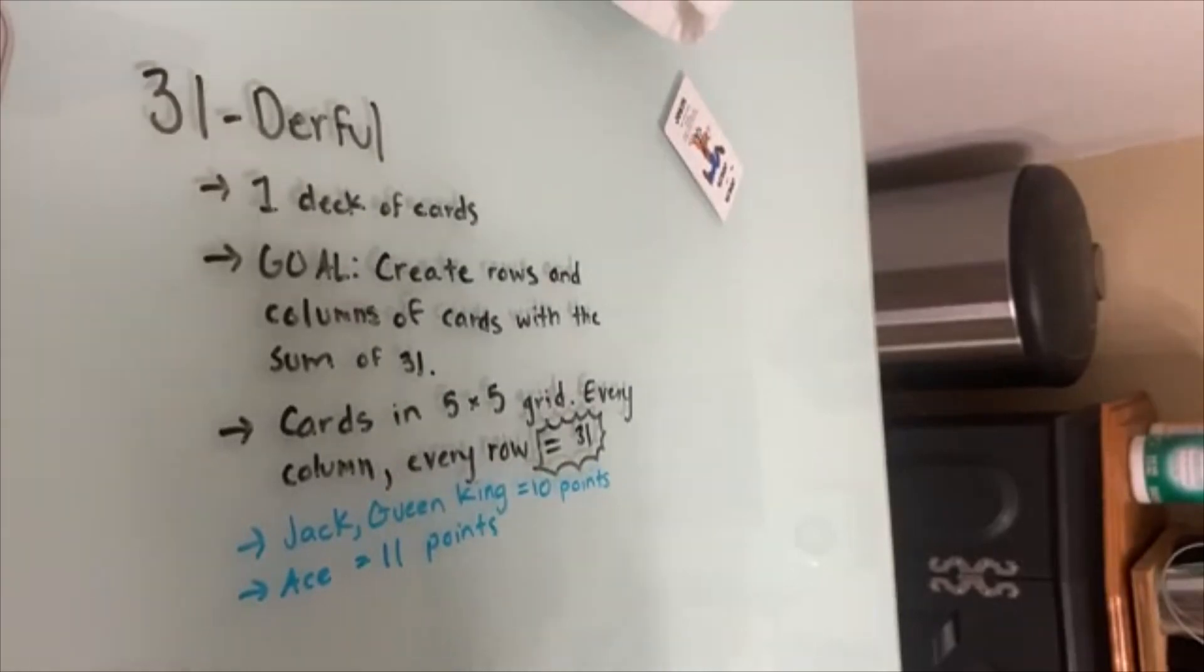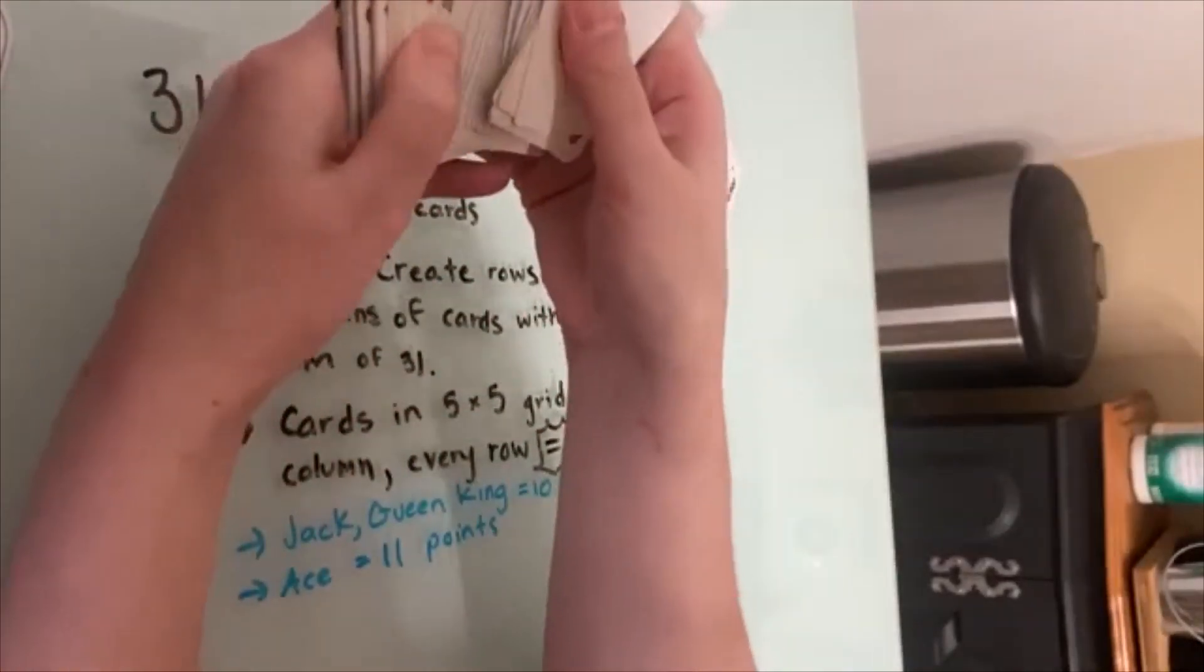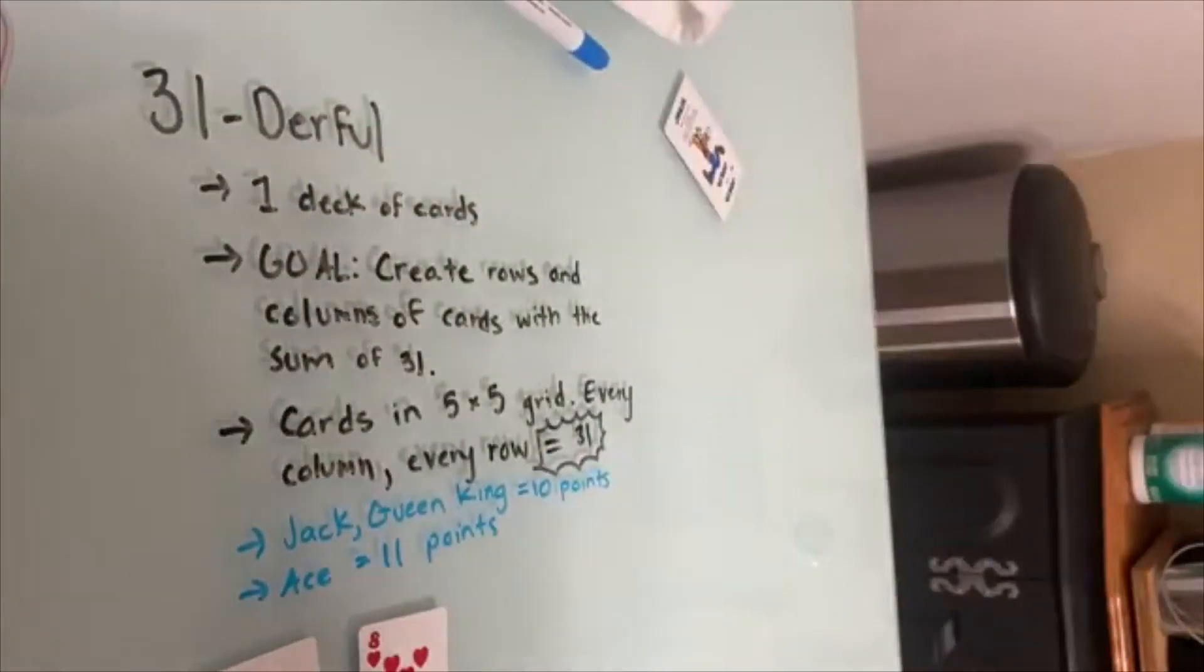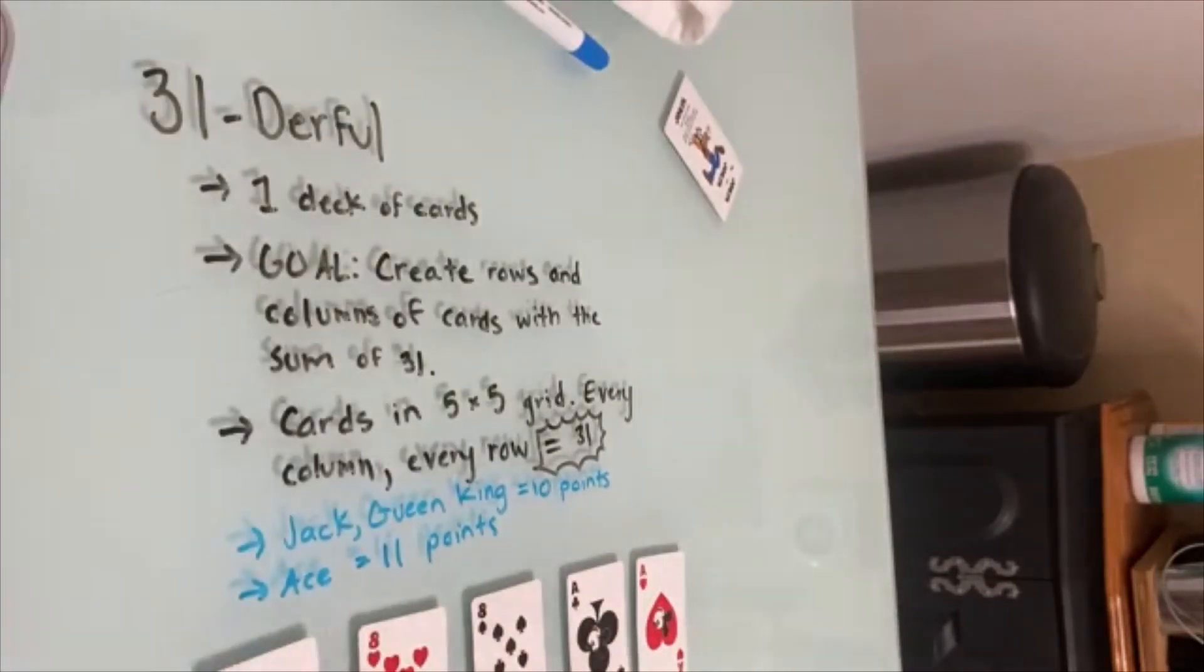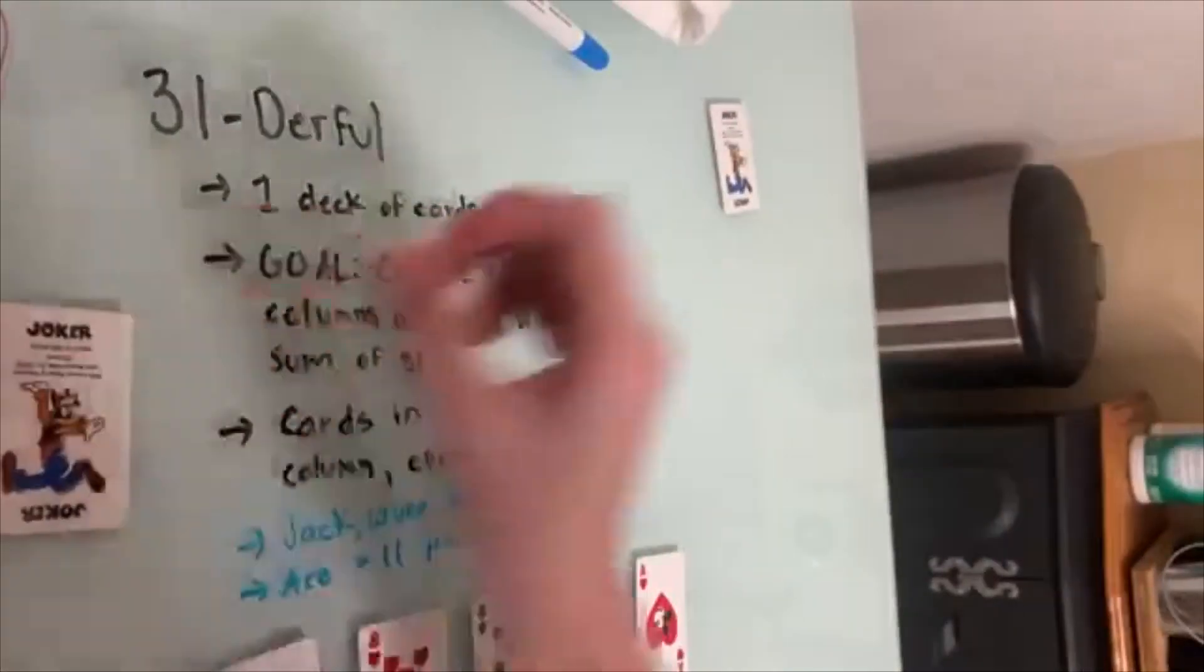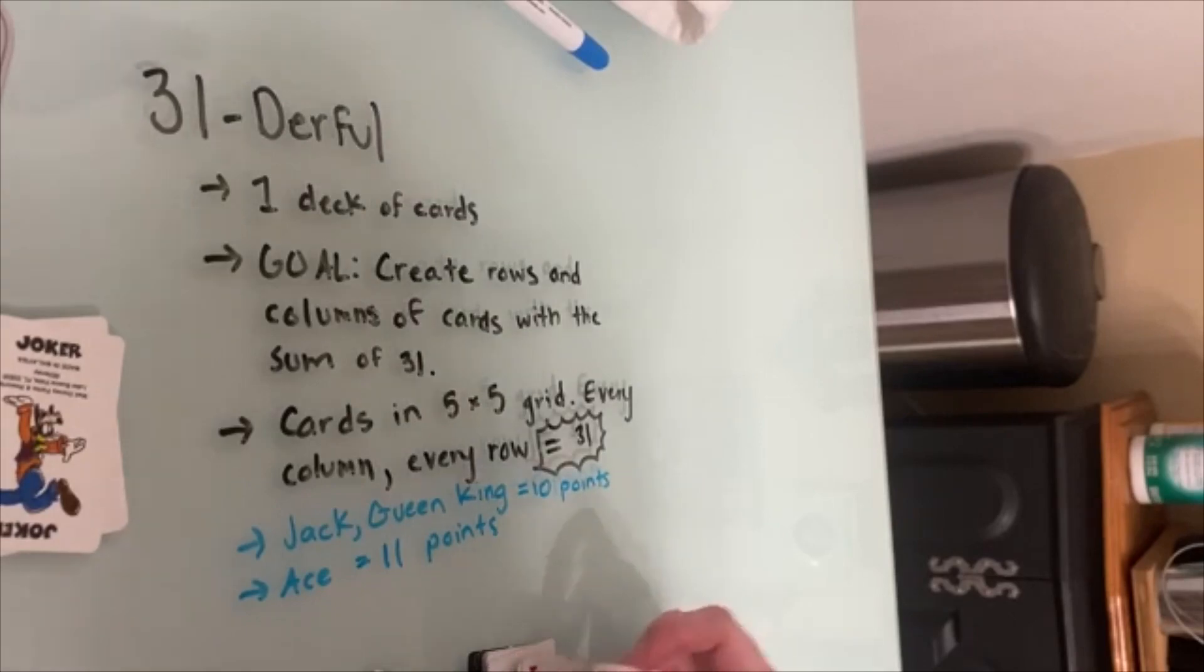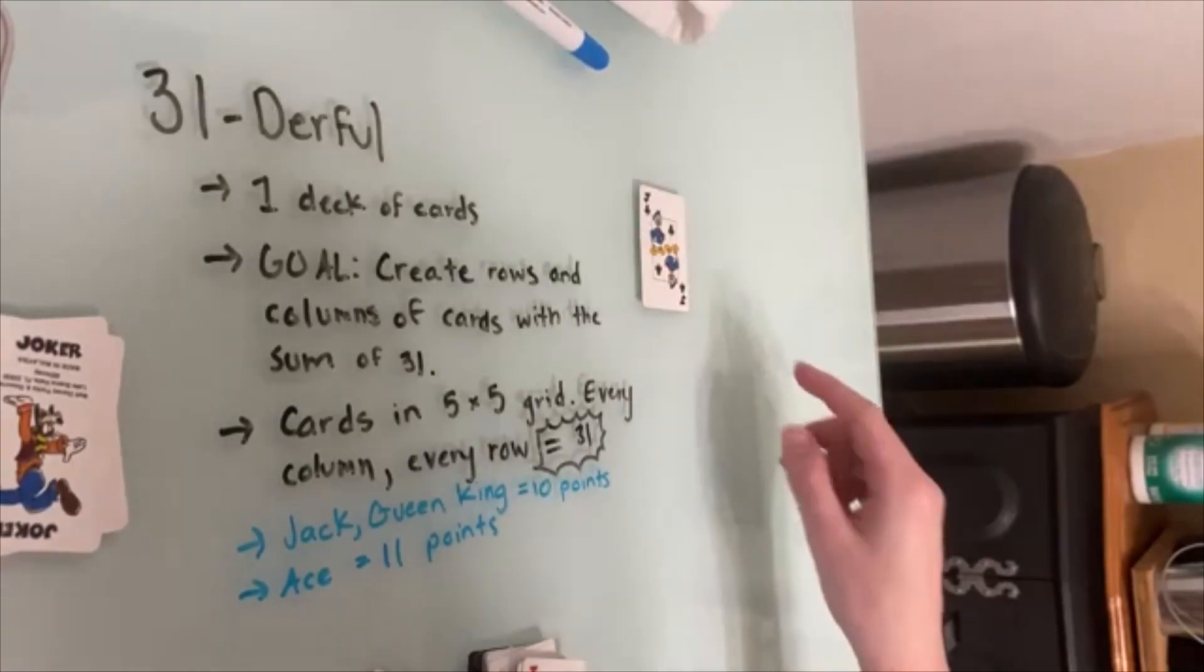So how do we get started? You are going to go through the deck, use whichever cards you want to make sure that every row and every column is equal to 31. I'm not going to use jokers, I'm going to put them aside. I'm going to look through until I find a way to make 31 going this way, and then start looking down and to the side.